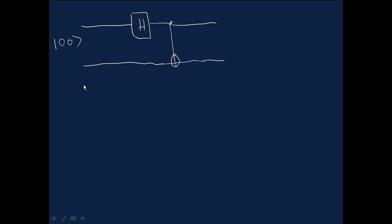So the |00⟩ state after applying the Hadamard, well, it's not going to have any effect at all on the second qubit, but it takes the 0 to an equal superposition of 0 and 1. So we end up with |00⟩ plus |10⟩. Notice the second qubit hasn't been changed at all, all over root 2.